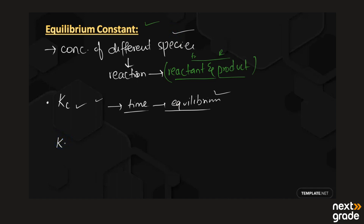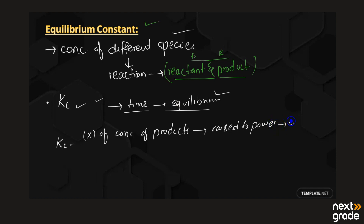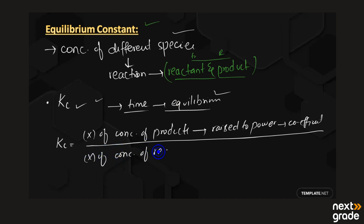The formula for Kc is the product of the concentrations of the products, each raised to the power of its stoichiometric coefficient, divided by the product of the concentrations of the reactants, each also raised to the power of its coefficient. So Kc is the ratio of the molar concentration of the products to the molar concentration of the reactants.